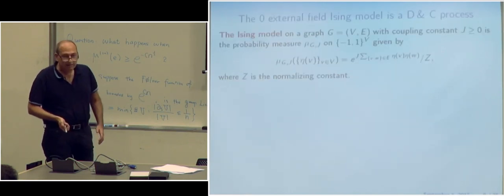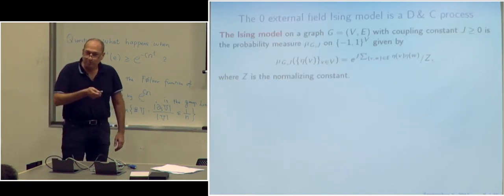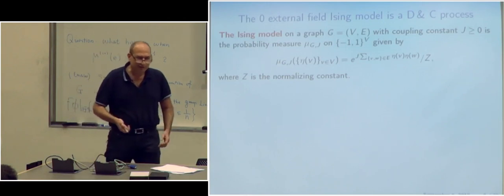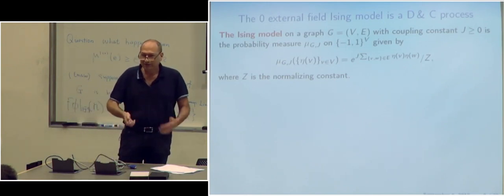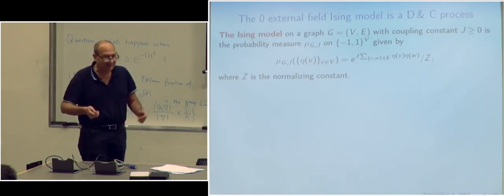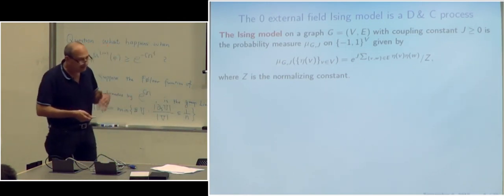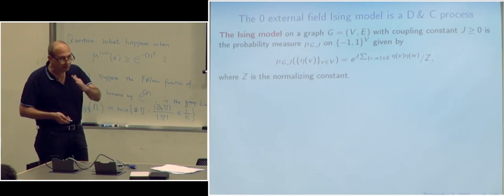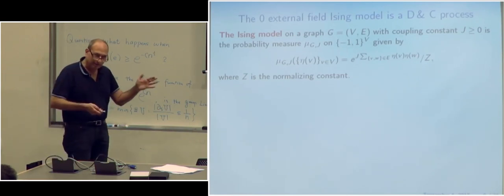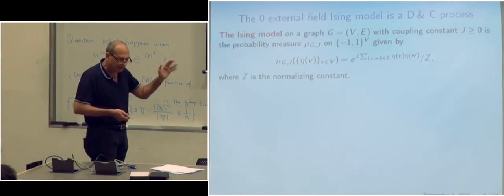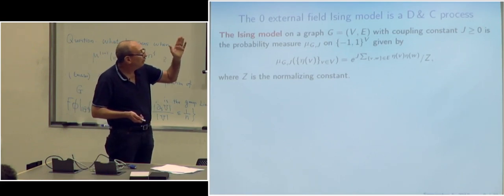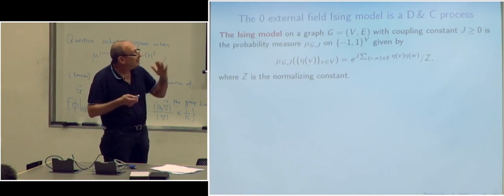That's the divide and color model associated to π and P. For every fixed P, we have this mapping — which happens to be affine — from random equivalence relations to the space of probability measures on {0,1}^V. In other words, if I give you a random partition, you have a corresponding divide and color process, which is just a probability measure on {0,1}^V, and this mapping is affine.